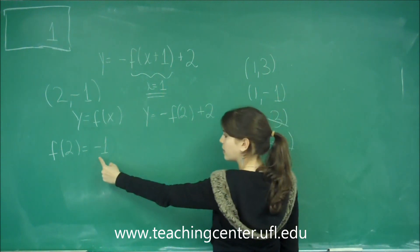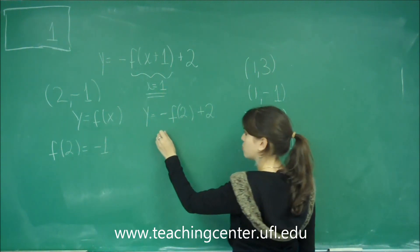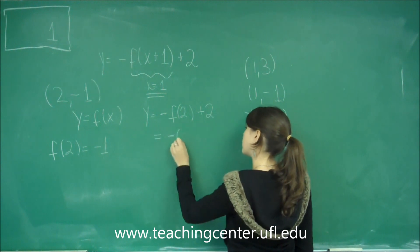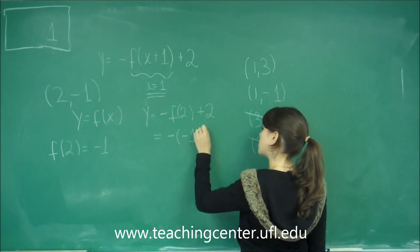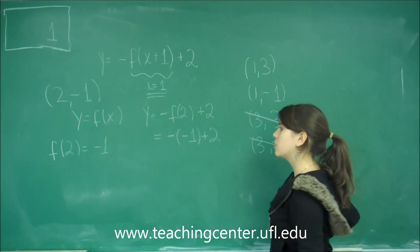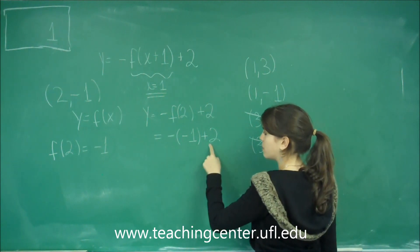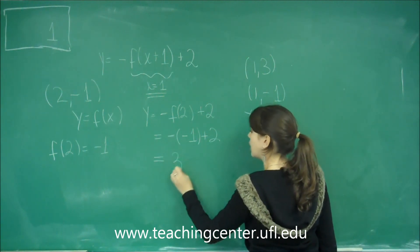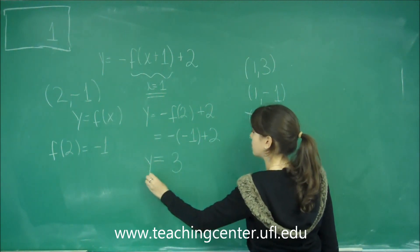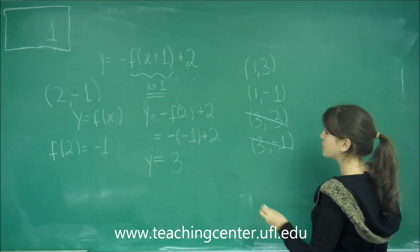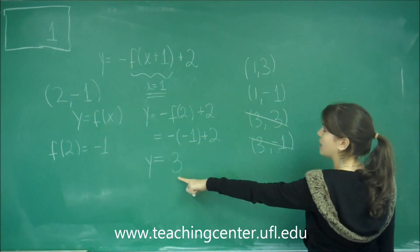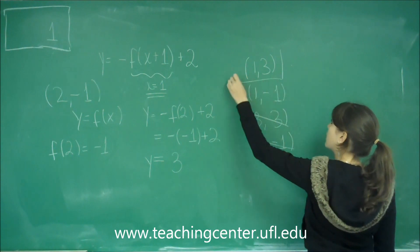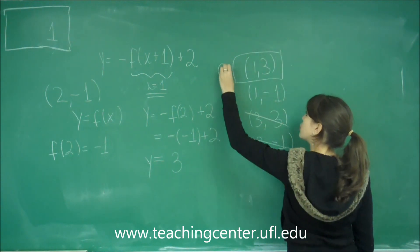And then we plug in negative 1 for f of 2. So we get negative times negative 1 plus 2. So this turns out to be a positive 1 plus 2 gives me a positive 3. So the solution is x equals 1, y equals 3, which would be solution A.